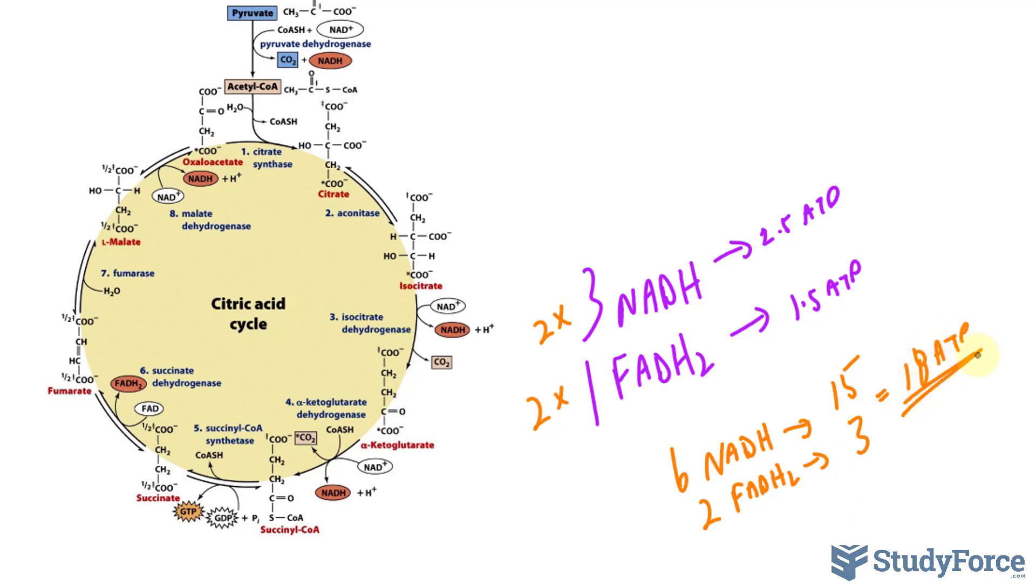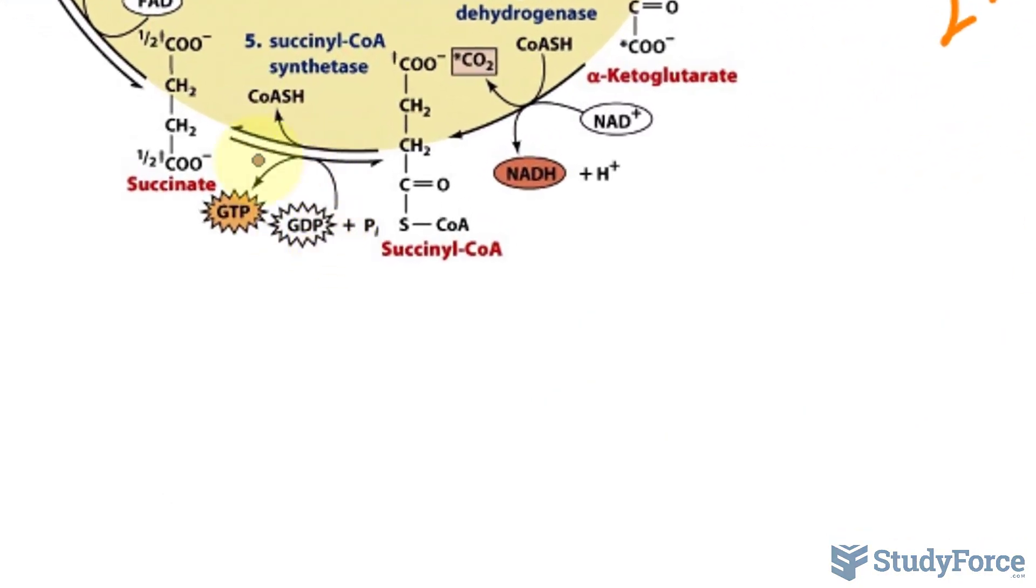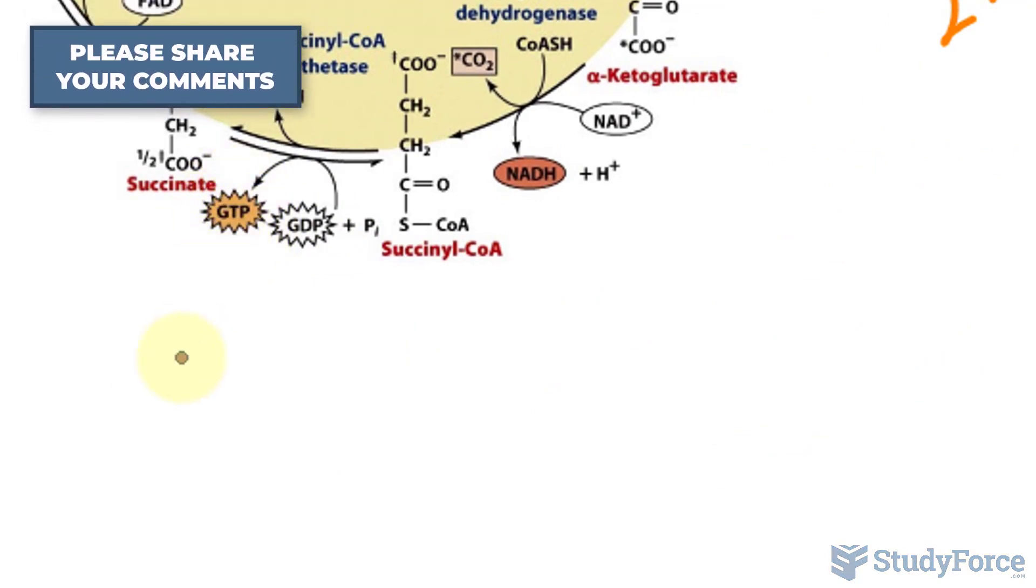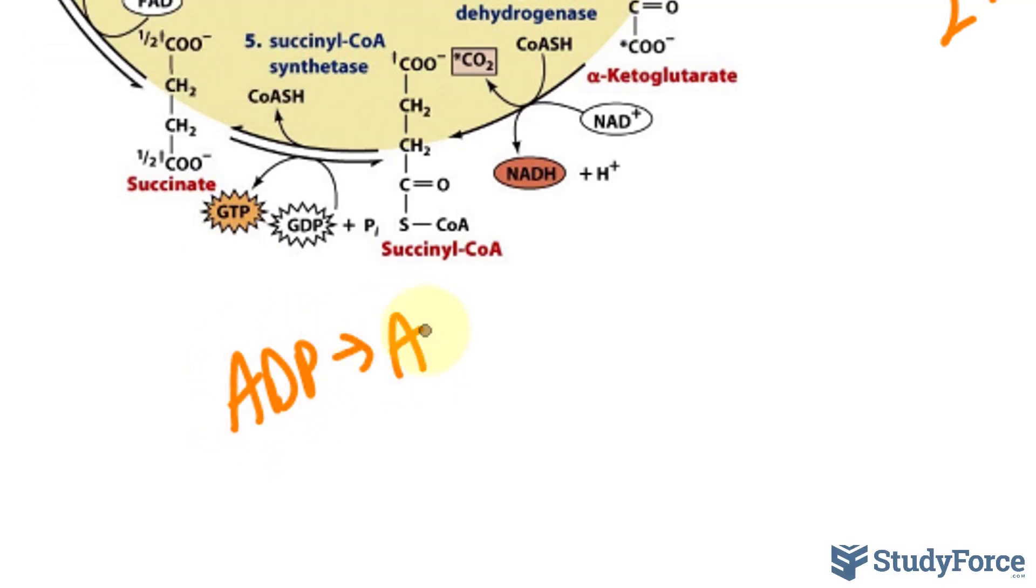One last thing to keep in mind, and it's not shown here, is that over here we have GDP forming GTP. The phosphate from GTP goes on to phosphorylate ADP to become ATP.